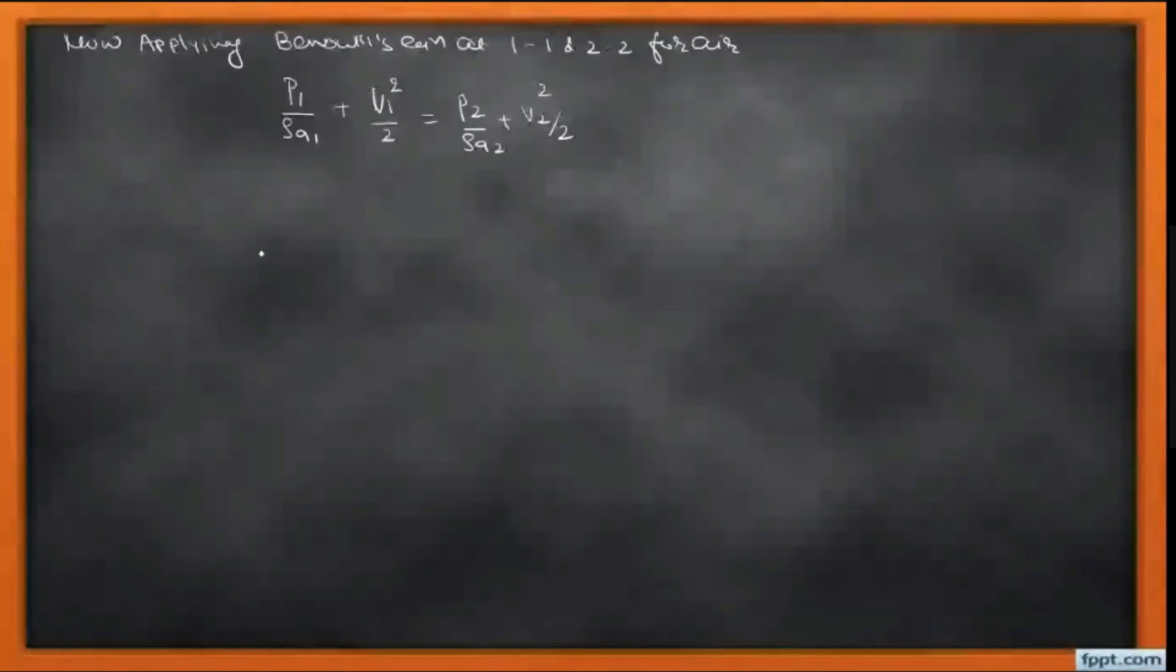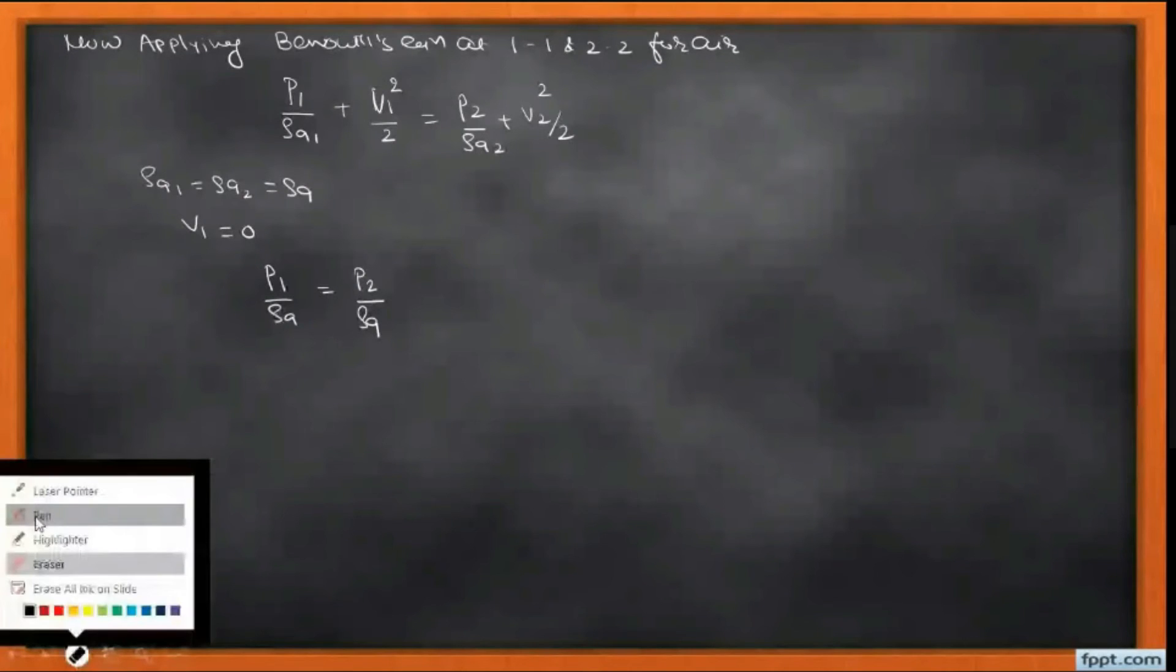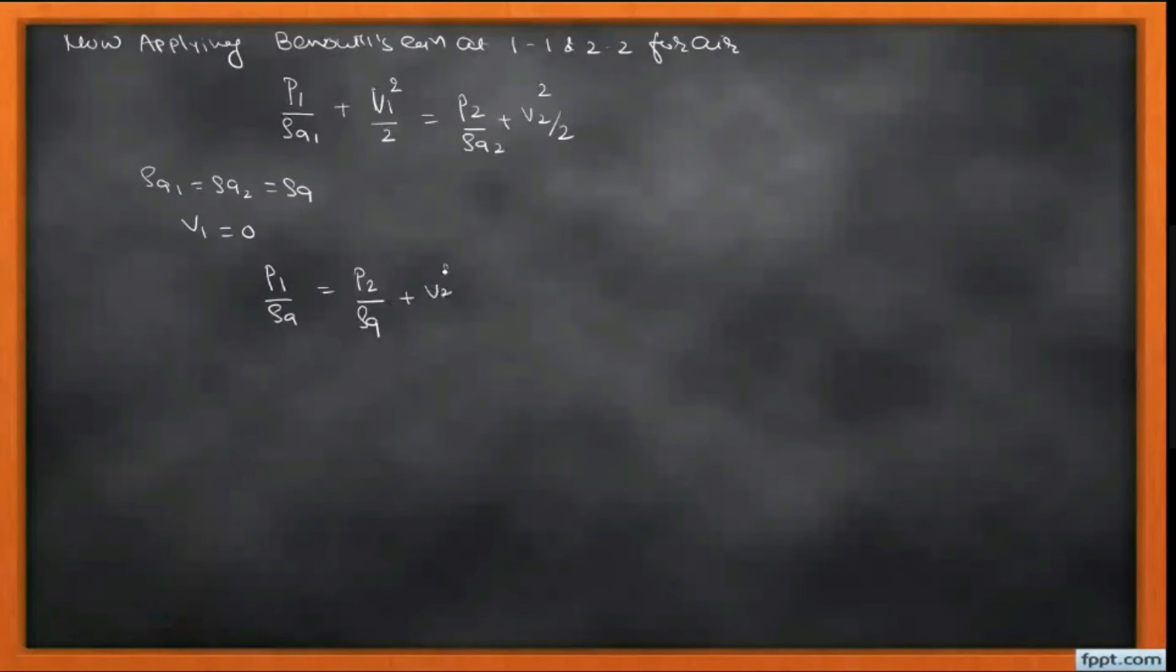Now we have two assertions: ρA1 equals ρA2 equals ρA, as well as V1 equals zero. So we apply these conditions in the Bernoulli equation. We get P1/ρA equals P2/ρA plus V2²/2. If we make V2 the subject, then V2 equals square root of 2(P1 - P2) divided by ρA.